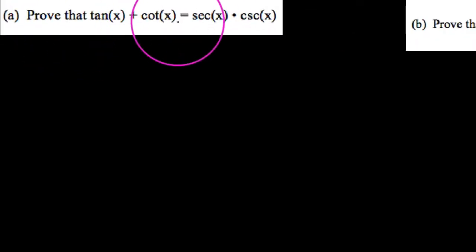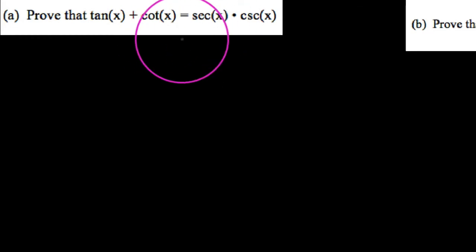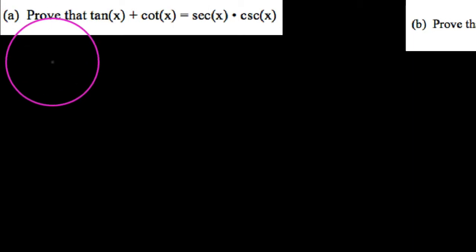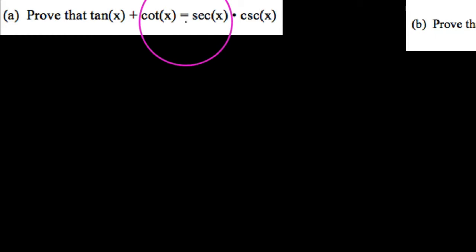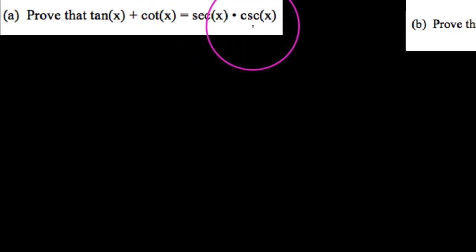This is my fourth and final video on proving trig identities, in which we're going to confront a couple of proofs in which we need to use common denominators and lots of algebra. So let's go ahead and take a look at letter A up here on the top left. It says prove that tangent of x plus cotangent of x equals the product of secant of x and cosecant of x.